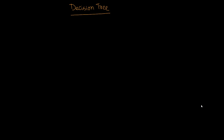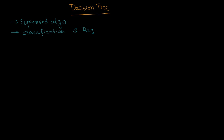Today we'll be talking about the decision tree algorithm. Decision tree is a supervised algorithm, meaning we're dealing with training and test datasets. Decision tree can be used for classification as well as prediction, that means regression purposes. In both types of problems we can use decision tree, but generally it is mostly used for classification problems. From the dataset, we create a tree-based structure, then we either classify or predict something.